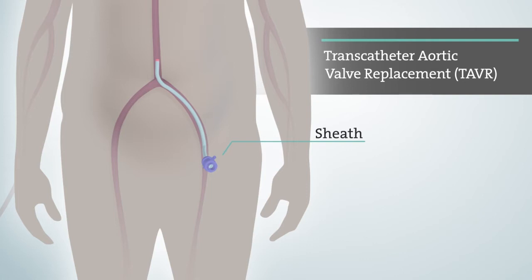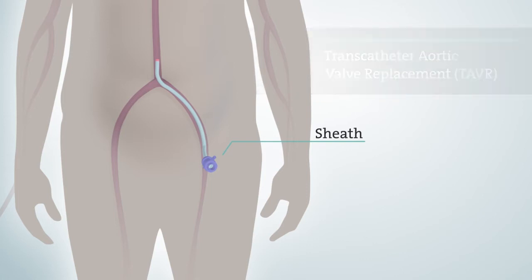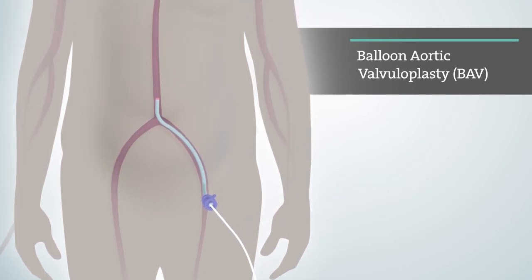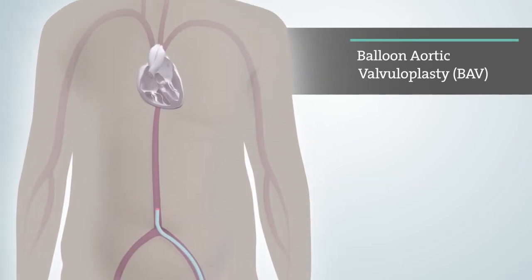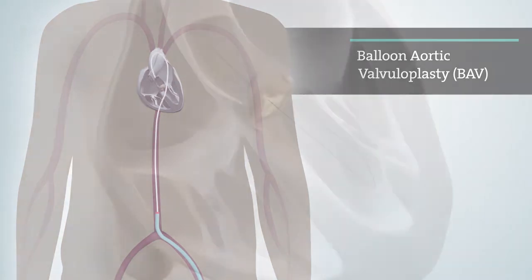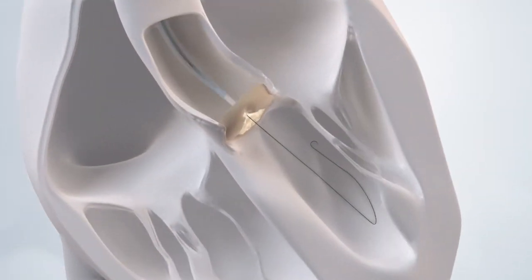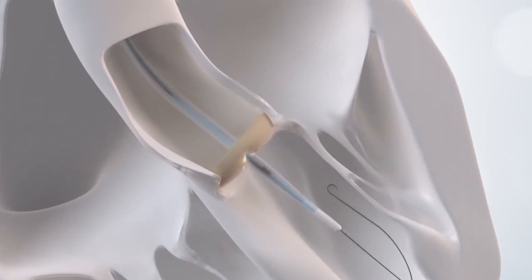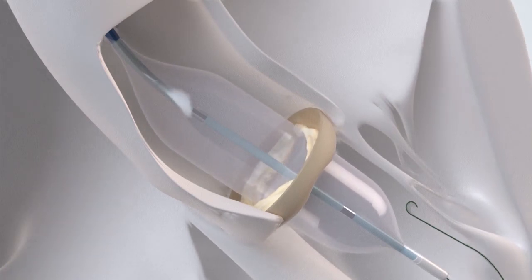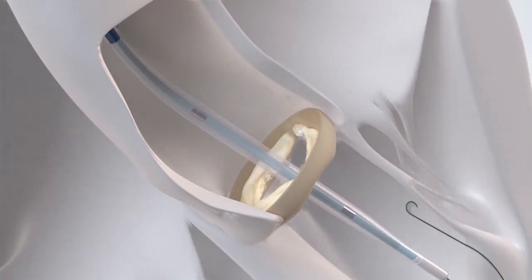Sometimes as a first step during the TAVR procedure, balloon aortic valvuloplasty, also known as BAV, is performed in order to open your narrowed calcified valve. Once the sheath is in place, your doctor will guide a catheter with the balloon on the end of it up to your aortic valve. Once the balloon catheter reaches your aortic valve, the balloon is inflated to open your narrowed calcified valve. The balloon catheter is then deflated and pulled back from the aortic valve.